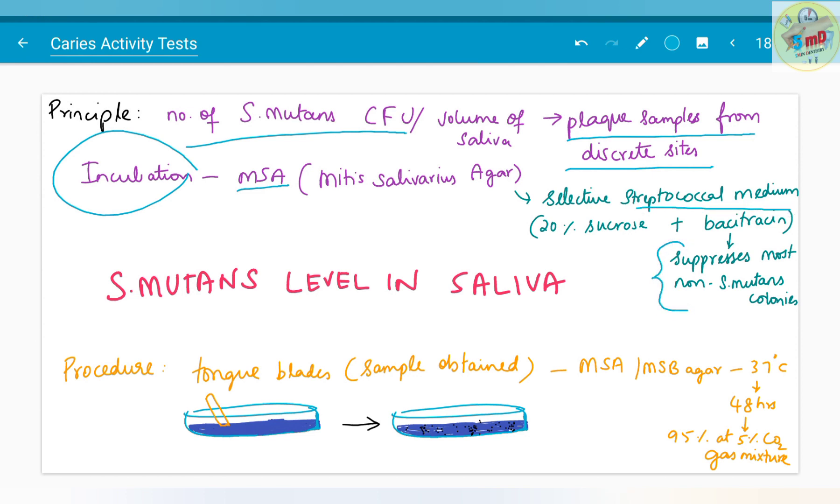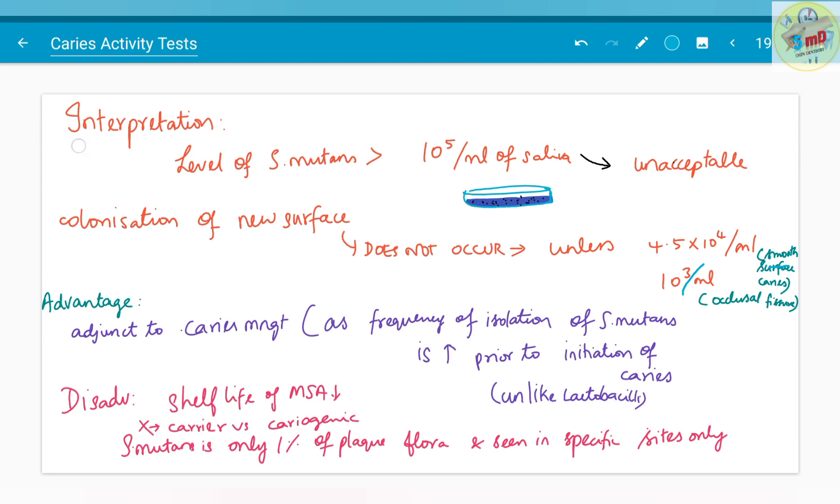It consists of 20% sucrose and bacitracin. The procedure is as follows: tongue blades from which these samples are obtained are dipped in MSA or MSB agar at 37 degrees Celsius for 48 hours at 95% and 5% CO2 gas mixture. The interpretation of this test is as follows: when the level of streptococcus mutans is greater than 10 to the power of 5 per ml of saliva, it is unacceptable.